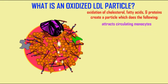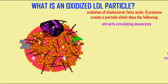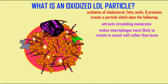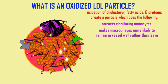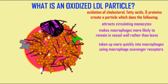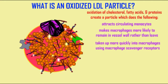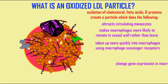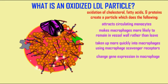LDL particles which are oxidized have different properties than LDL particles which are not. Oxidized LDLs attract circulating monocytes, make macrophages more likely to remain in the vessel wall rather than leave, and are taken up more quickly into macrophages because they utilize different receptors — the macrophage scavenger receptors. Oxidized LDLs can even change gene expression within the macrophage.